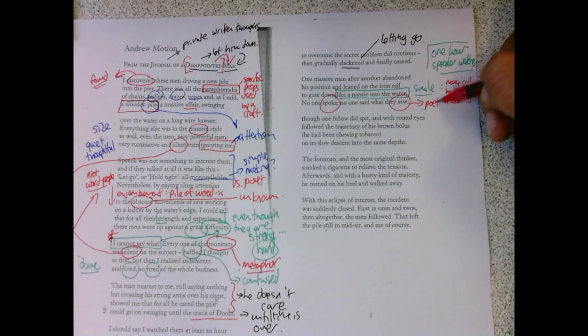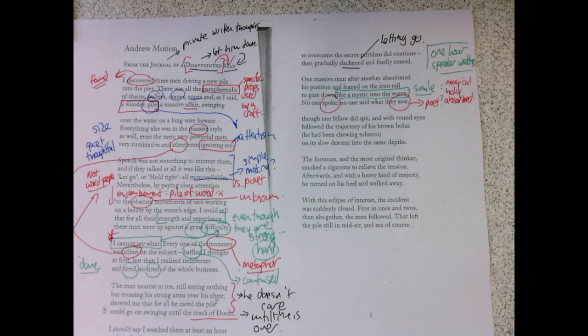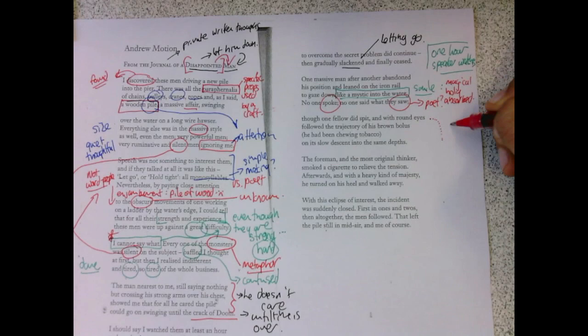Though one did spit, and with round eyes followed the trajectory of his brown bolus, he had been chewing tobacco on its slow descent into the same depths. So, these guys are sitting here, and they spit, and it comes down. That is this image.